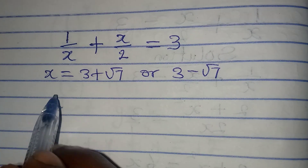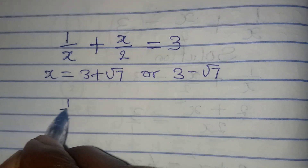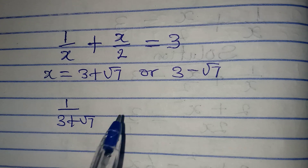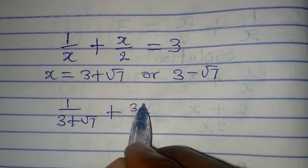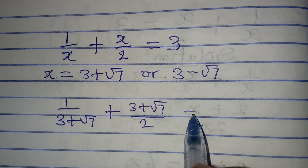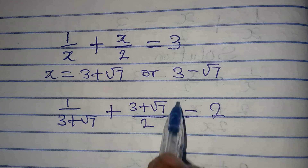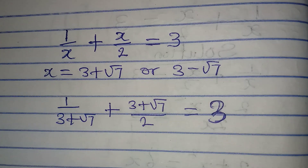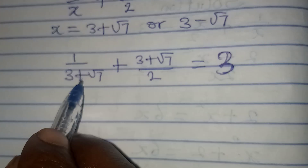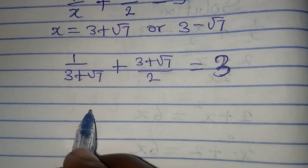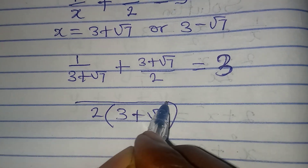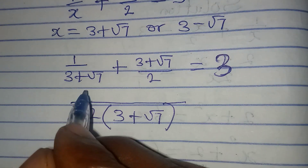Substituting x equals 3 plus root 7 into the original equation: the left-hand side becomes 1 over (3 plus root 7) plus (3 plus root 7) over 2. To combine these fractions, multiply the denominators together to get 2(3 plus root 7) as the common denominator. The numerator becomes 2 times 1 plus (3 plus root 7) times (3 plus root 7).